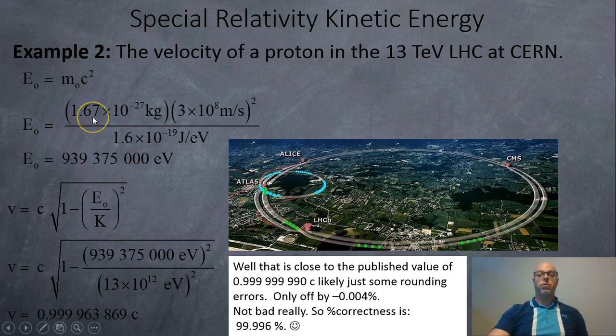We're just going to plug that into our speed formula that we just derived earlier, and we get the rest energy divided by the 13 tera electron volts kinetic energy that we're going to accumulate. And we get this nice little number: 0.999963869c. So that's 99.9963869% speed of light.